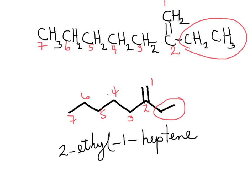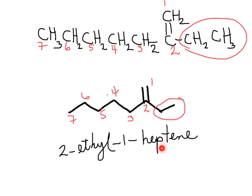A second example with the same concept. What we observe here is that we have a seven-carbons-long hydrocarbon chain, but one path is eight carbons long — it's longer. However, the longest hydrocarbon chain for the family name must include both of the sp2 carbons. So this one is a heptene where the double bond is between carbon number one and two — that is 1-heptene — which happens to be substituted with an ethyl group on position number two. So this one is 2-ethyl-1-heptene.